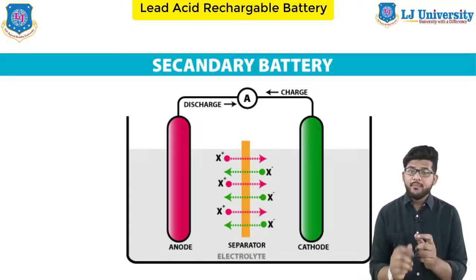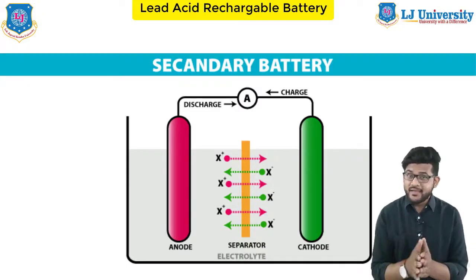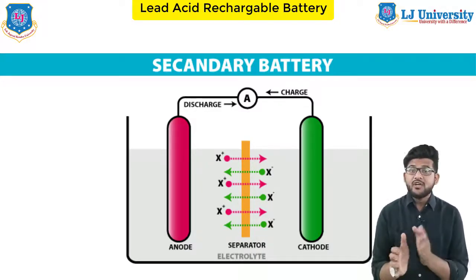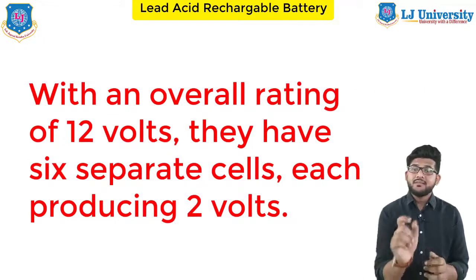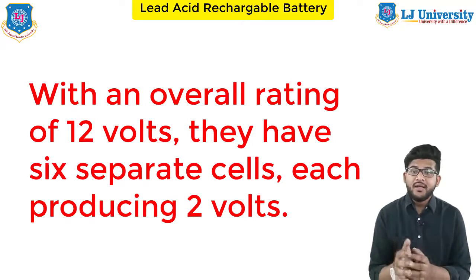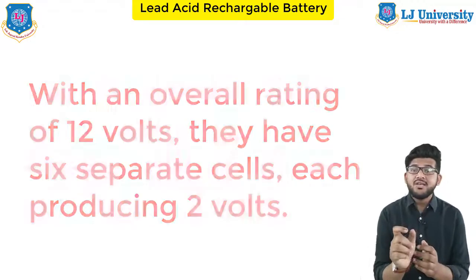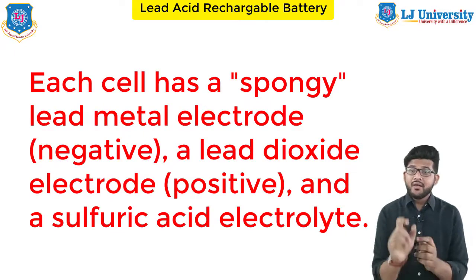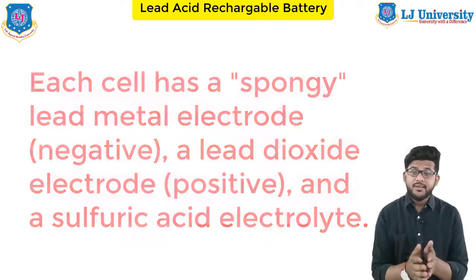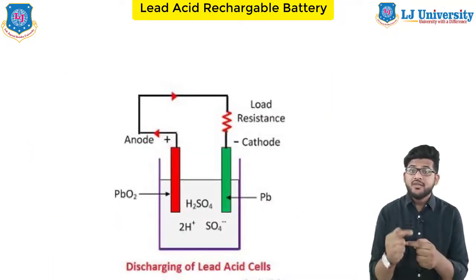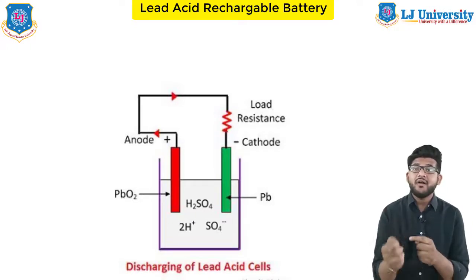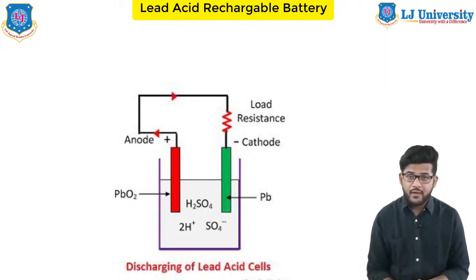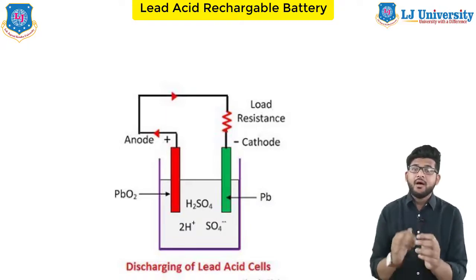First is the lead acid battery, which is a tried, trusted, and tested technology that has been in use since the 19th century. With an overall rating of 12 volts, they have six separate cells, each producing 2 volts. Each cell has a spongy lead metal electrode as the negative, a lead dioxide electrode as the positive, and sulfuric acid as the electrolyte. As the battery discharges, both electrodes become coated with lead sulfate and the sulfuric acid is largely converted into water, while electrons flow around the external circuit to produce power.